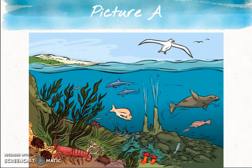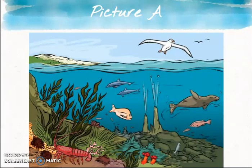On your notes guide, choose two of the following pictures to apply the different new terms we've used: organism, population, community, ecosystem, abiotic factors, and biotic factors. Choose two of pictures A, B, or C and identify within each picture examples of each term. You may want to pause the video so that you have a chance to write down all of the examples within each image.